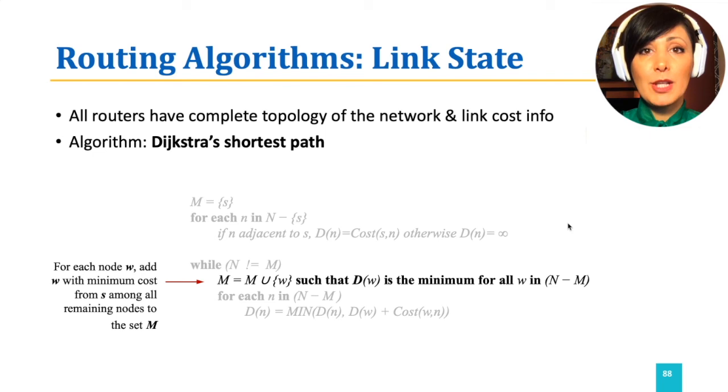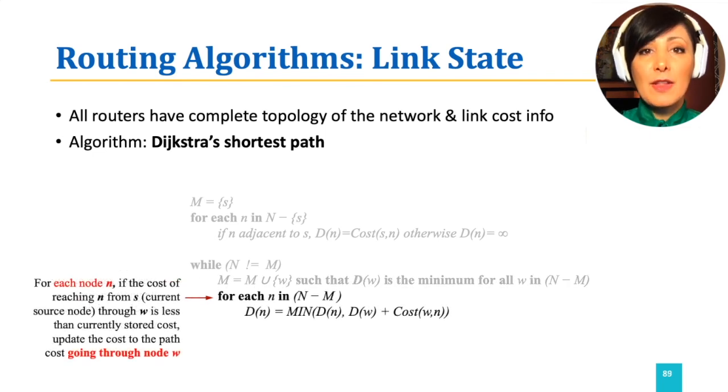For this node W, we compute every other unexamined node N's least path cost, DN, by finding the minimum value of DN between the current value or by reaching N through W, which is DW plus cost of link from W to N. Note that this step is examined for every single unexamined node W. Means that, going over this loop, we examine if we can minimize the path by reaching the node N through node W, breaking the path finding problem to be one link closer to the source.